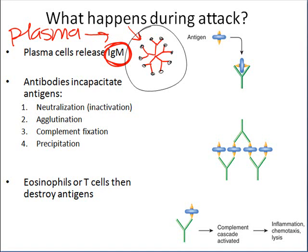There are several ways an antibody can incapacitate an antigen. One is neutralization, also called inactivation — the antibody binds to the antigen in such a way that any harmful qualities are neutralized and the antigen can no longer harm cells. Another process is agglutination, where a bunch of antigens and antibodies clump together in a large group — a macrophage will then come by and consume that mass.